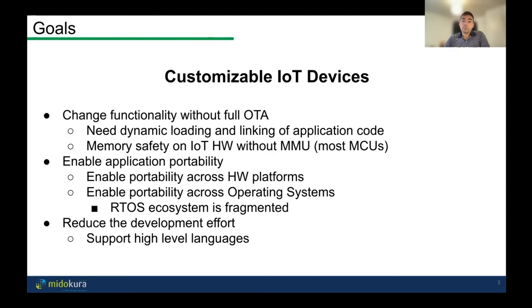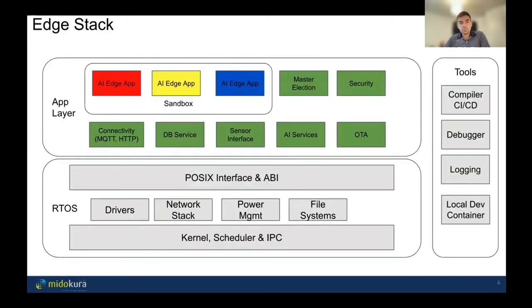We don't have MMUs on most MCUs, which means no virtual memory and no process isolation. The number one source of security vulnerabilities is actually memory bugs — true on the server side, and certainly true in the IoT domain too. What we propose is to make an edge stack that separates the application layer cleanly from the OS and creates a sandbox and set of services for edge applications that are portable across multiple platforms.